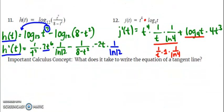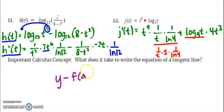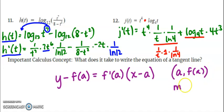One last question: what does it take to write the equation of a tangent line? We need a point and a slope — more specifically, the slope at that point. The equation is y minus y₁ equals the slope at a point times (x minus a), where the point is (a, f(a)) and the slope equals the derivative of f at that input. We want the slope at one specific point, not everywhere.